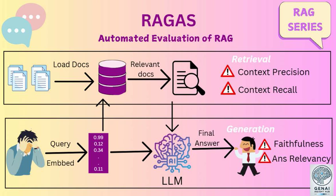Context relevance ensures that the AI picks out the most pertinent information from its sources. Imagine searching a huge library for a specific answer — you don't want to get bogged down by irrelevant details. Context relevance helps the AI focus on the key information needed to provide a concise and accurate response. So it's like having a filter that sifts through all the noise and highlights the most important information.